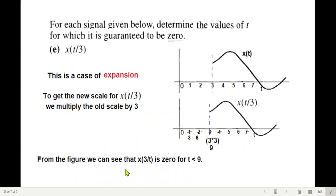So our answer will be, from figure we can see that x(t/3) is 0 for t less than 9. So less than 9 the signal is 0. So I hope you have been able to follow this. Please let me know through your comments. Thank you.